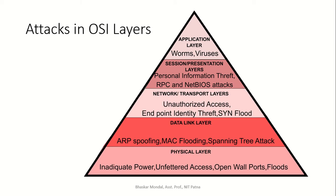Here you can see a map between different OSI layers and the attacks that can take place in the corresponding layers. Starting from the physical layer — because the physical layer is totally open to the public — there can be inadequate power supply, meaning somebody can do a power cut. Also, an unfettered open wall port means anybody can connect their device to that port and do anything to your network.